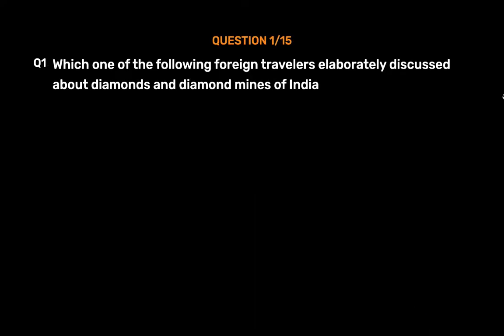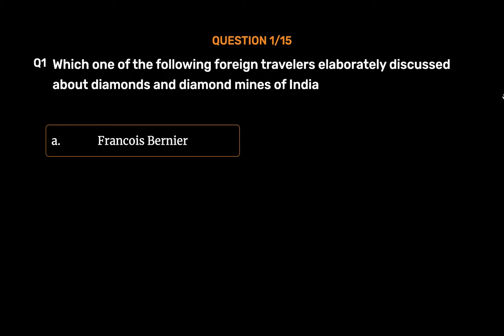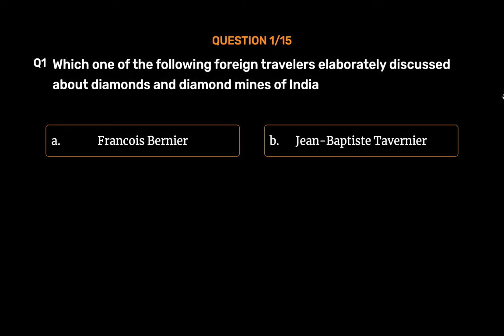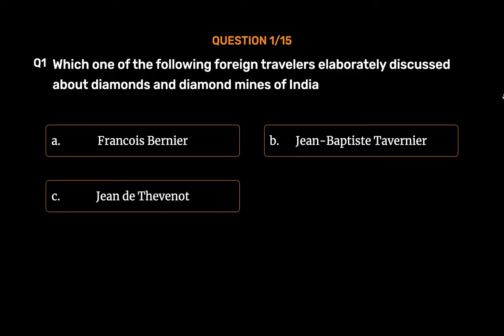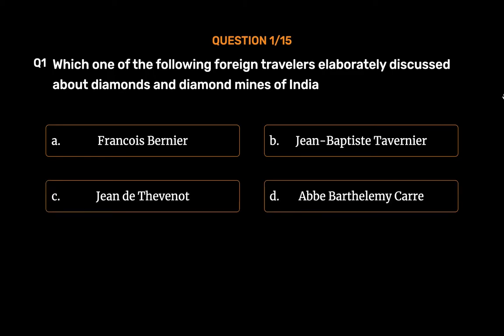Question No. 1. Which one of the following foreign travelers elaborately discussed about diamonds and diamond mines of India? Option A: Francois Bernier. Option B: Jean-Baptiste Tavernier. Option C: Jean de Thevenot. Option D: Abbe Bartholomew Carrey.